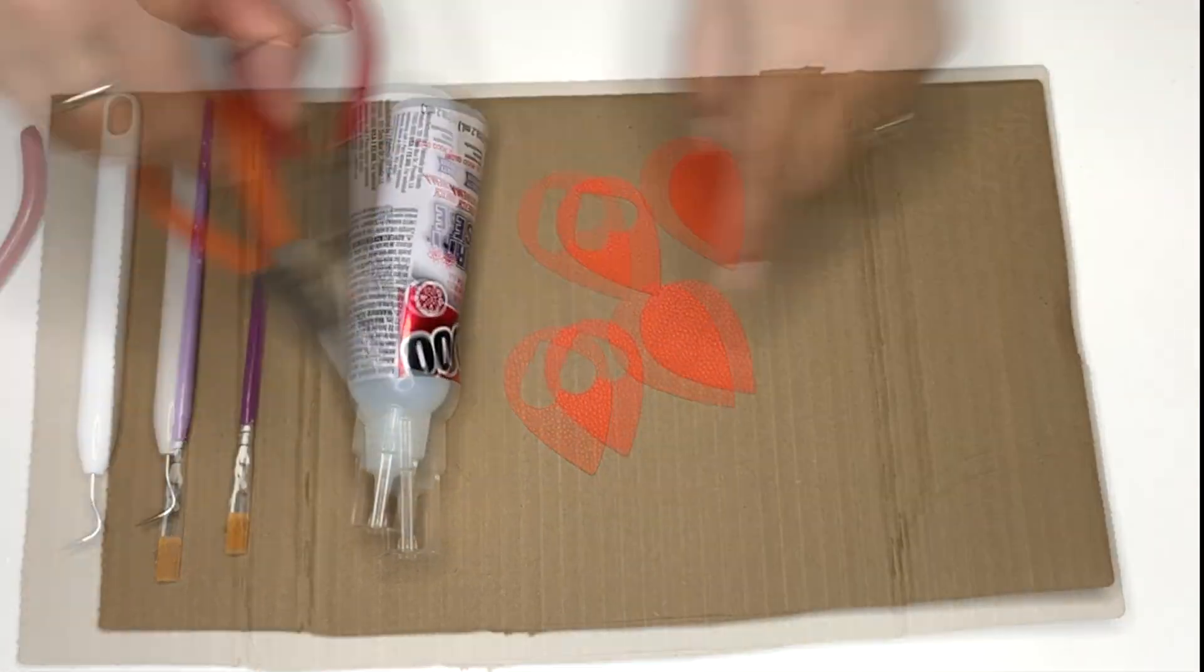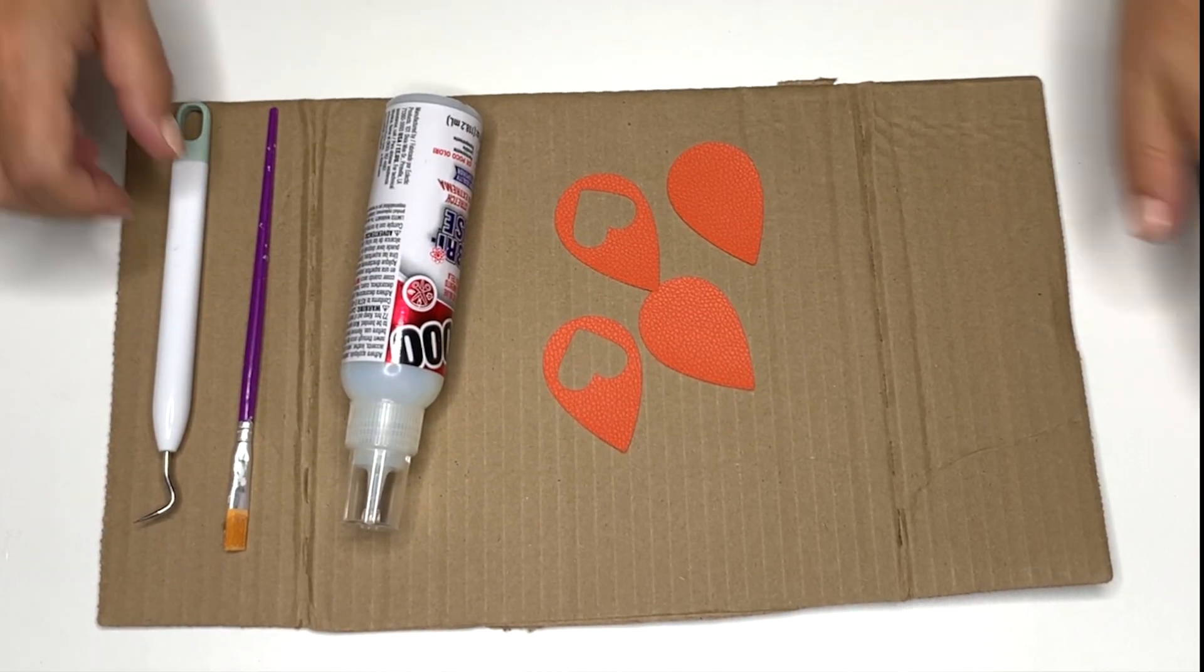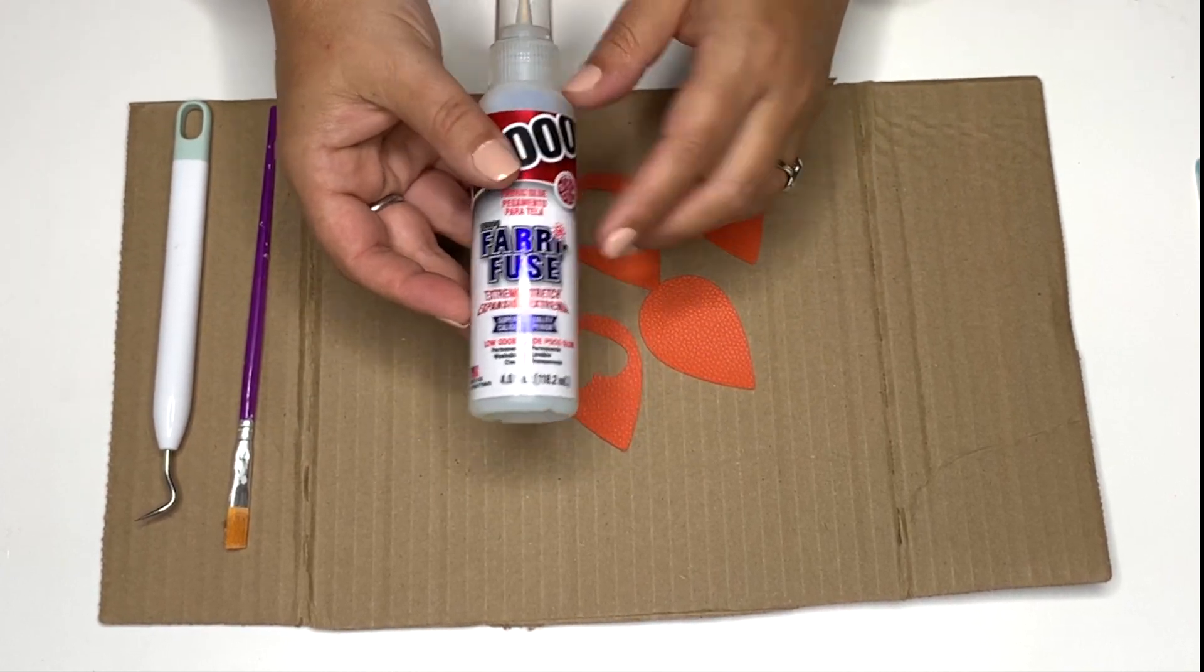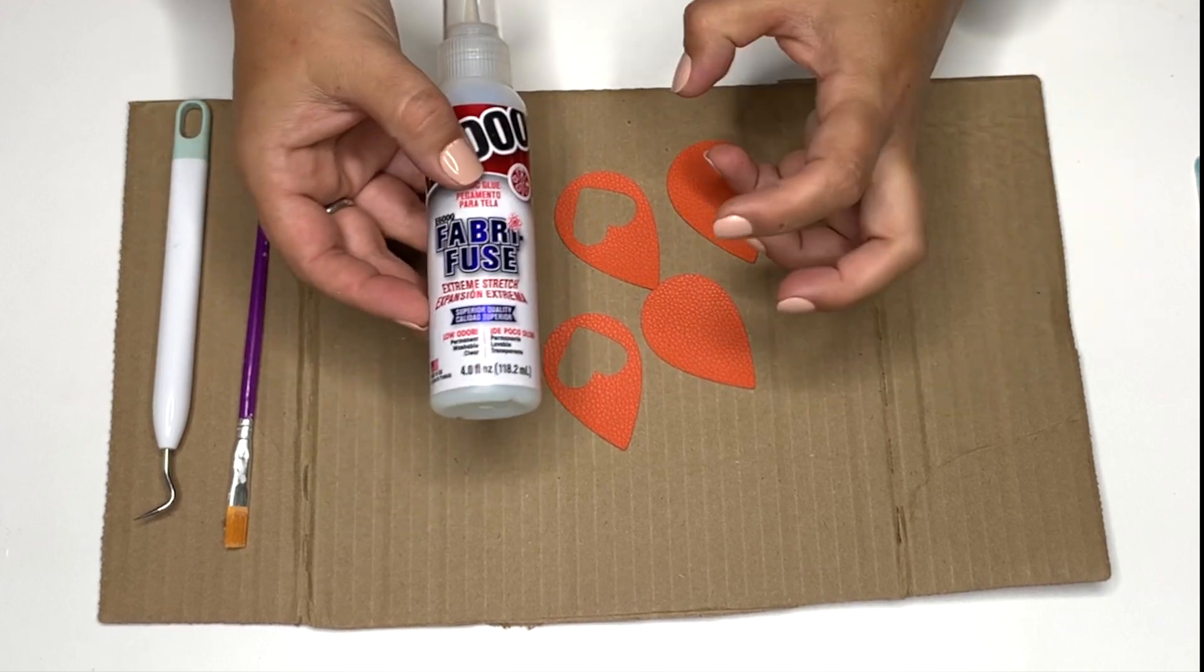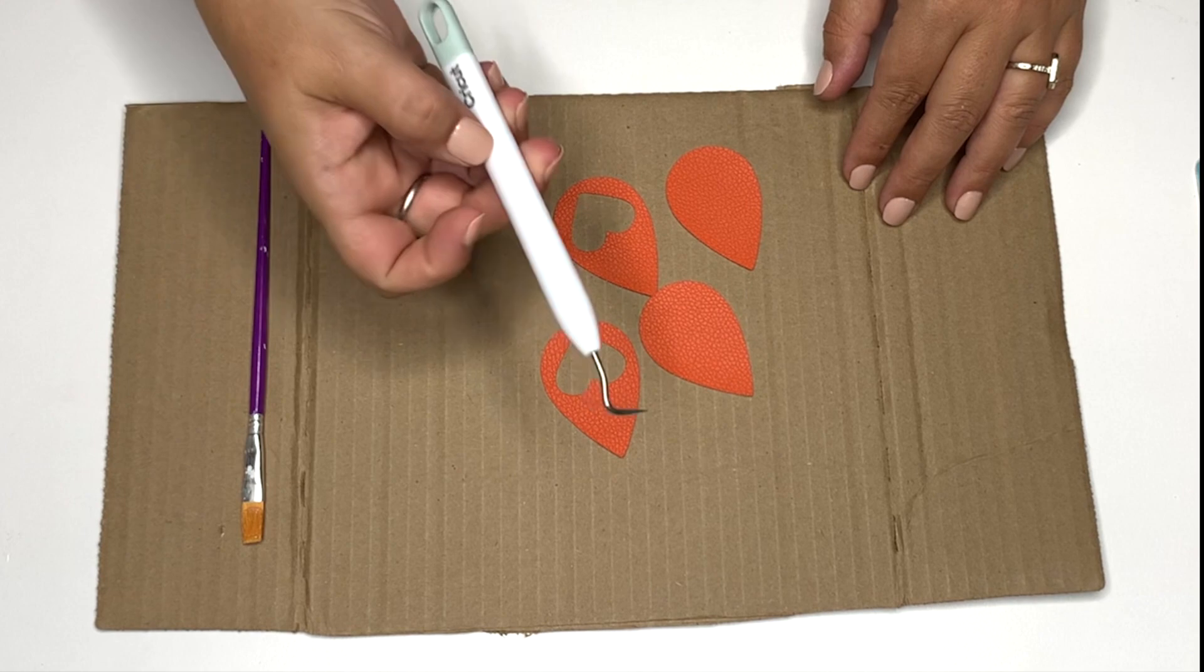If you've never put together a pair of PU leather earrings you will need some earring findings as well as some jump rings. You will also need two pair of needle nose pliers and I like to assemble anything fabric with E6000 fabric fuse. Now this is because if you use super glue it would be very very stiff and uncomfortable. This allows the leather to move.